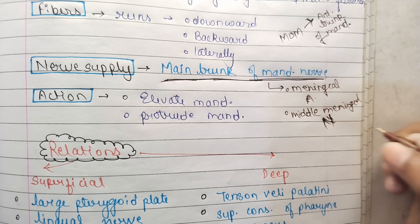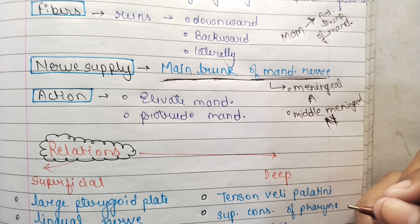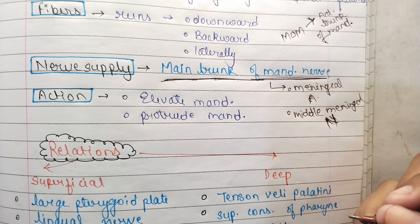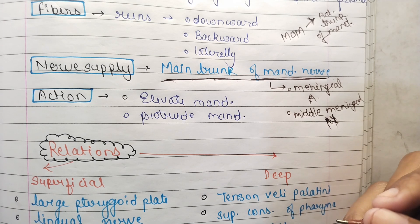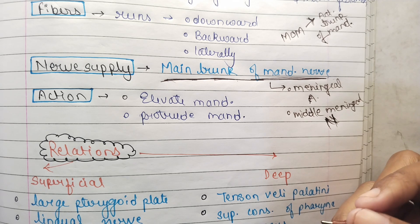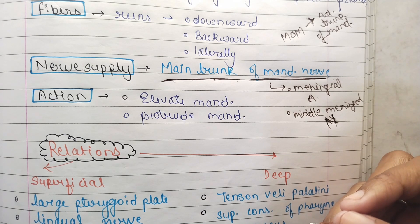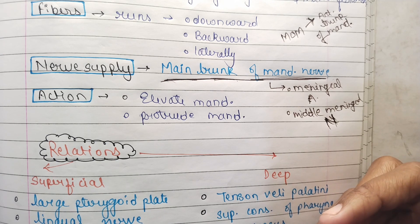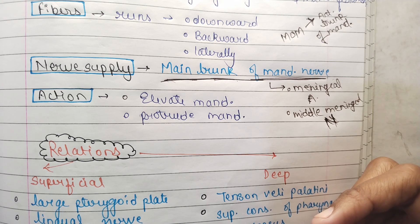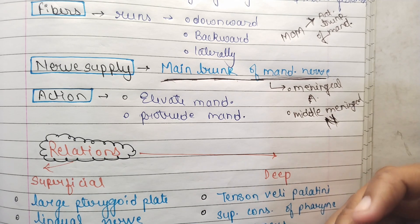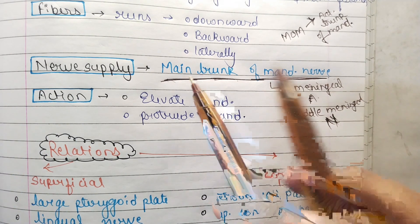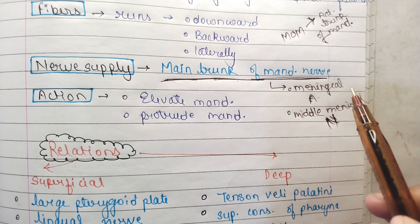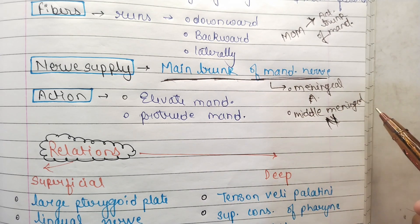This can be asked as an exam question, and it has been asked as a question. The key point is: all the muscles of mastication are supplied by the anterior trunk of the mandibular nerve, except the medial pterygoid, which is supplied from the main trunk. The main trunk gives only the meningeal artery and the middle meningeal nerve.